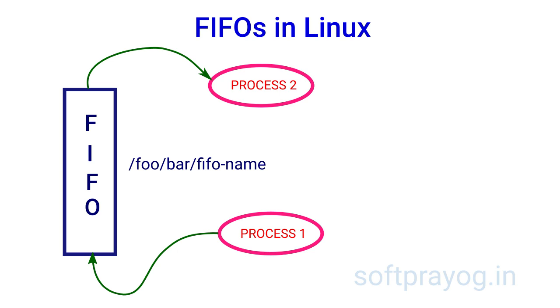If a process opens a FIFO for read it blocks till another process opens it for write. Similarly if a process opens a FIFO for write it blocks till a second process opens it for read. This is because data cannot be stored permanently in a FIFO. It is like a pipe. If you send water from one end there should be a receiver at another end and you cannot store water in a pipe.